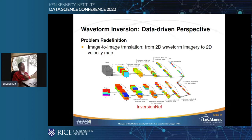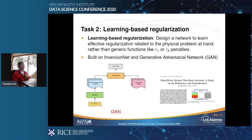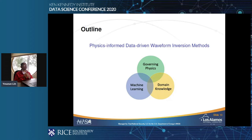The learning-based regularization helps us learn the prior directly from data instead of imposing straightforward L1 or L2 penalties. This work was developed and published earlier this year. Now, we look at how we try to combine efforts not only from traditional physics-based methodologies but also from machine learning.